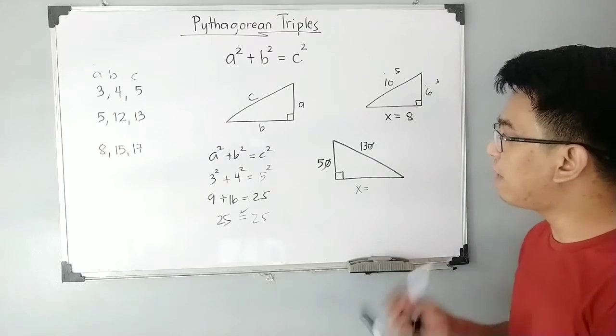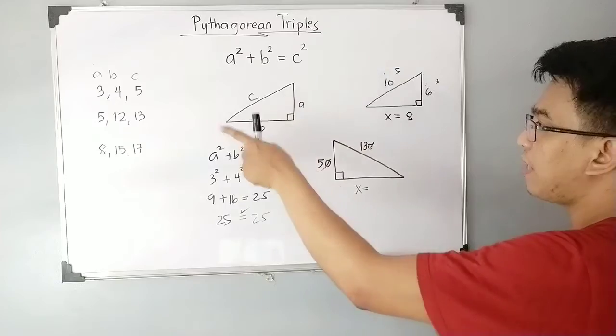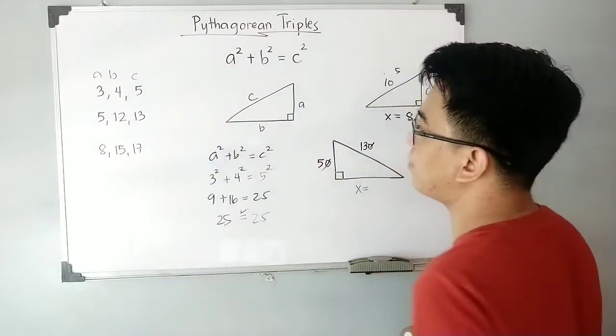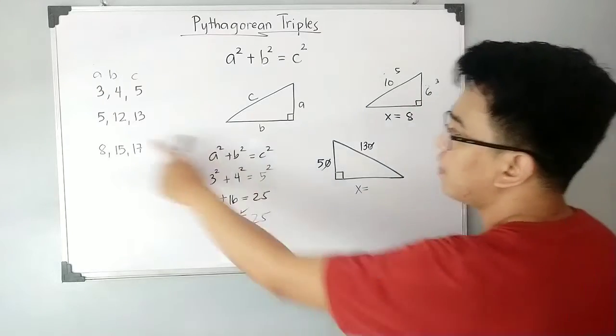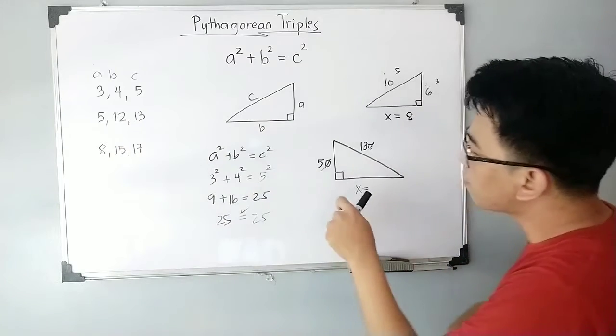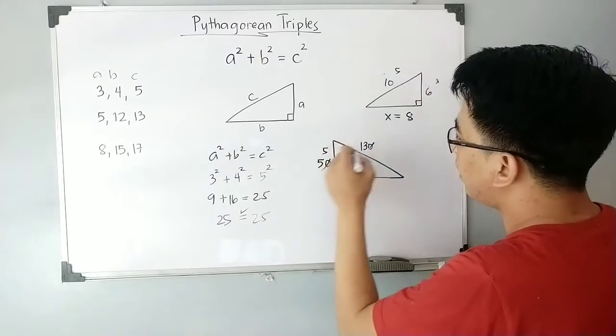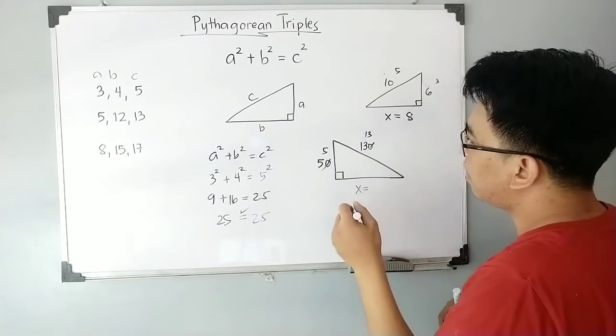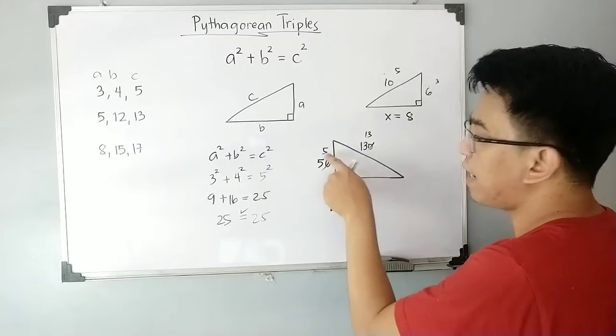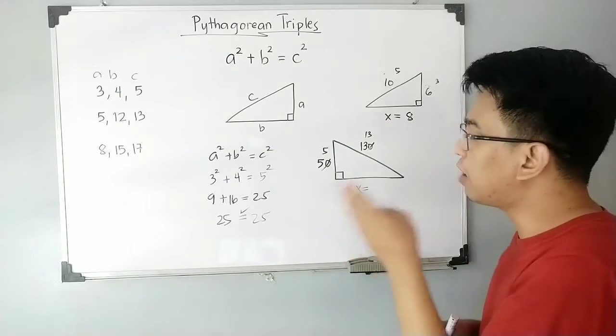Going to the Pythagorean triples, if you memorize this, we have 5 and 13, so the missing one is 12. Look at the pattern: you have 5. To make it 50, you need to multiply 5 by 10. For 13, you need to multiply it by 10 to make it 130.